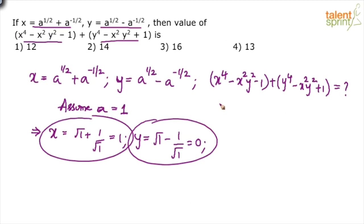So what do we get? Here, what do we get? 1 power 4 minus, anyway this is 0, minus 1 plus this is 0 minus 0 plus 1. But options are no way close. Options are like 12, 14, 16, 13. How is that possible? Let me just check. Oh sorry, I think x is equal to 2. I am sorry about this. x will come out to be 2. I am so sorry. You cannot be committing such mistakes in the exam.